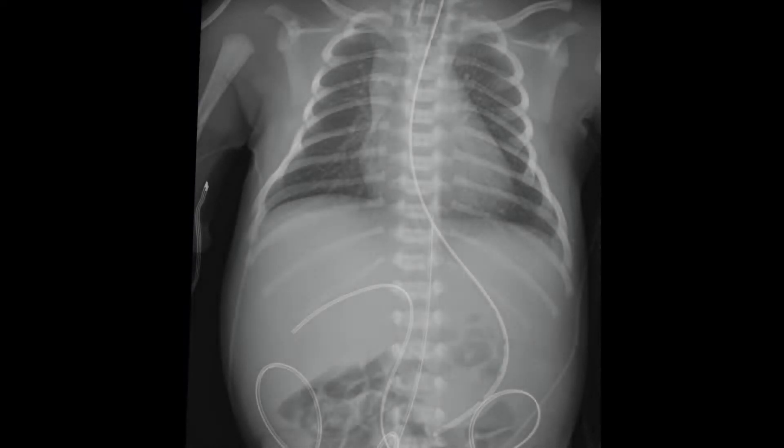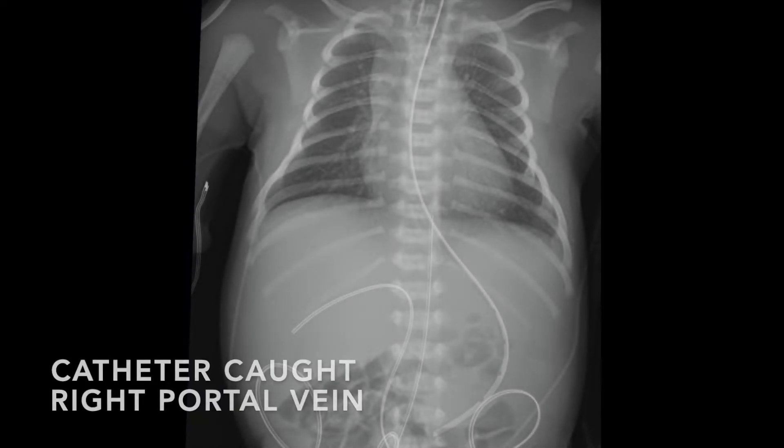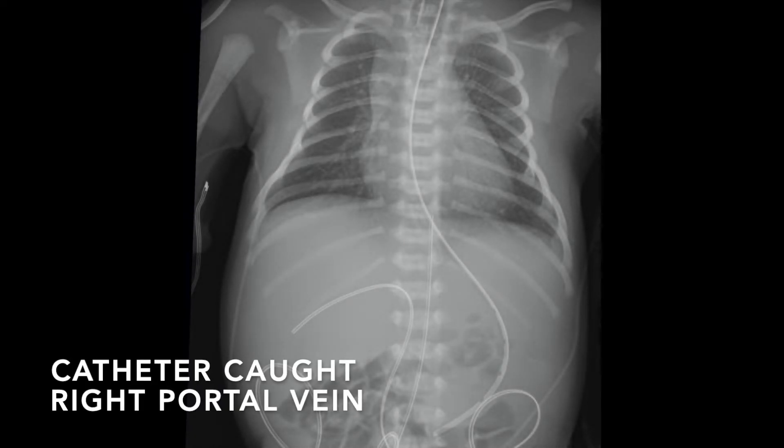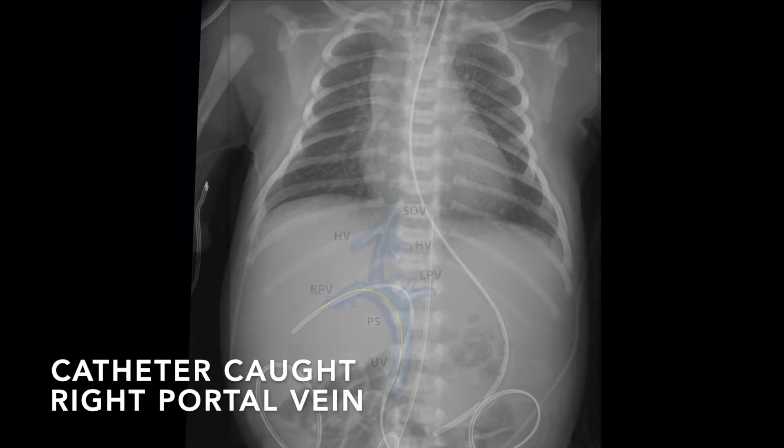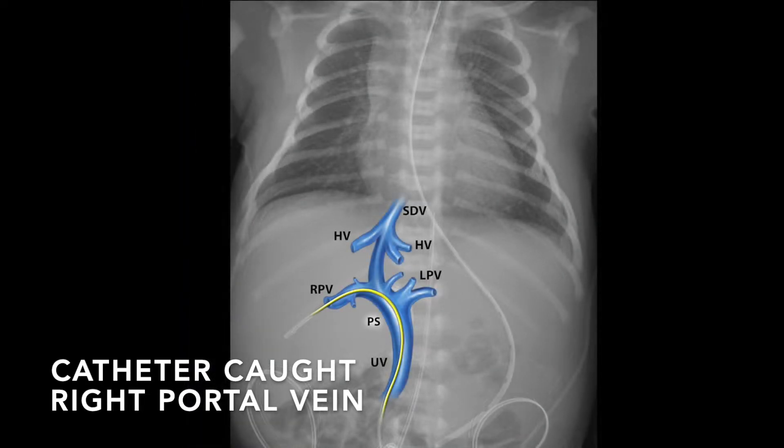We will now look at catheters caught in the right portal veins, as shown in this radiograph and overlaid illustration.